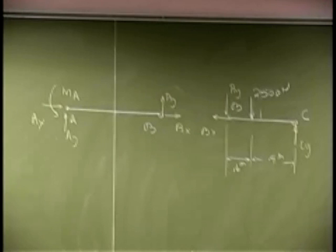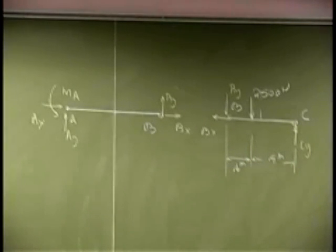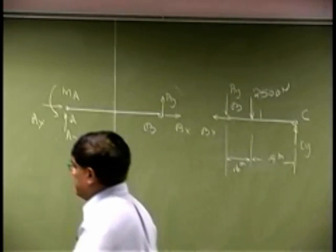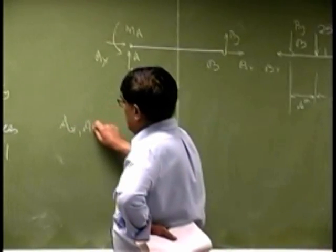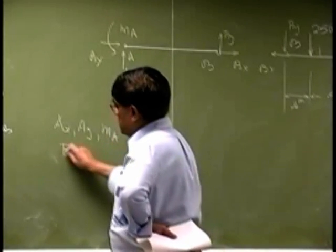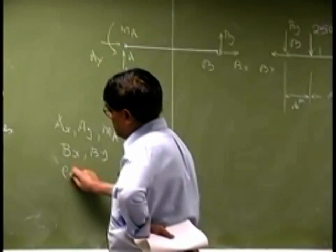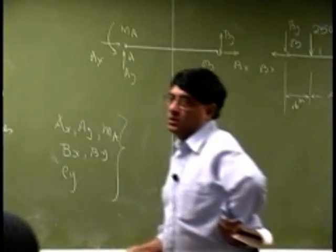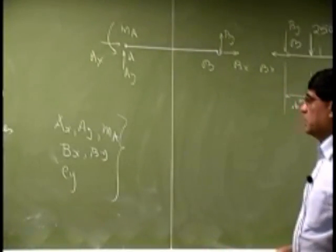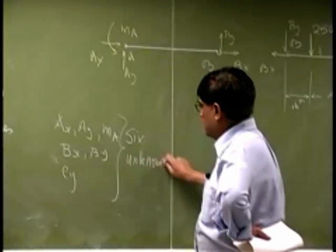That gives you the free body diagrams for parts AB as well as part BC. If you go through exact same count the way we did before, then what you get here now is AX, AY, MA and you add two more, so you have BX, BY plus you have CY. That's the total number of unknown forces in the given problem, which is basically six unknown forces.